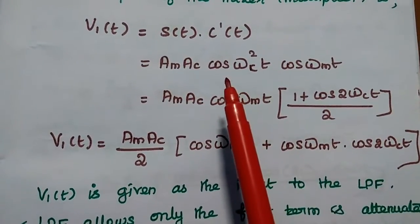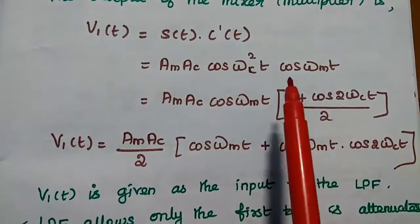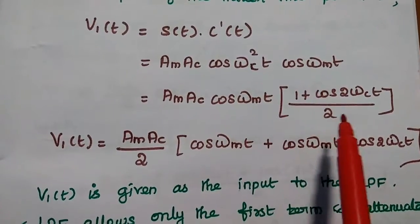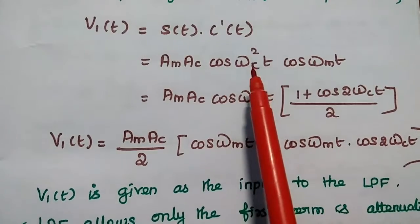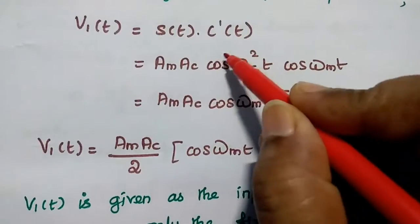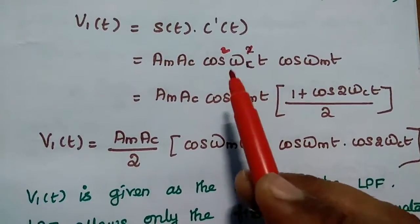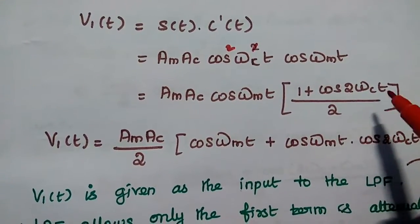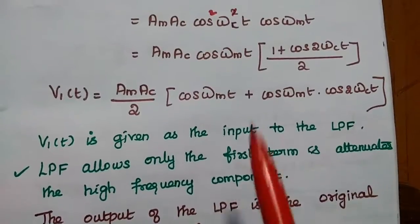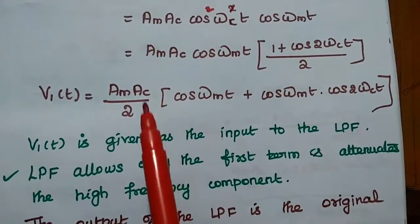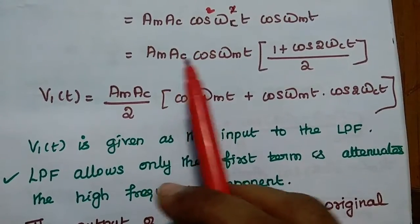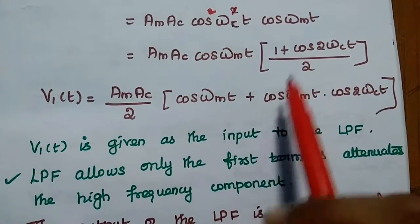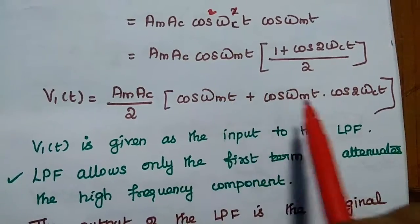We know the formula: cos²(θ) = (1 + cos(2θ)) / 2. Using this formula, cos²(ωC·t) can be replaced as (1 + cos(2ωC·t)) / 2. Multiplying inside, we get (A_M · A_C) / 2 · [cos(ωM·t) + cos(2ωC·t) · cos(ωM·t)]. This is the output of the multiplier.